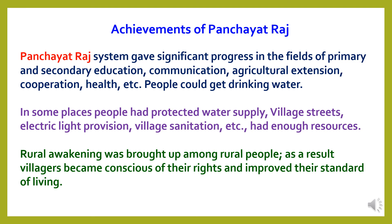Panchayati Raj system has given significant progress in the fields of primary and secondary education, communication, agricultural extension, cooperation, health, etc. People also get drinking water through the Panchayati Raj system. In some places, people have protected water supply, village streets, electrical light provision, village sanitation, etc. Rural awakening was brought up among rural people. As a result, villagers became conscious of their rights and improved their standard of living.